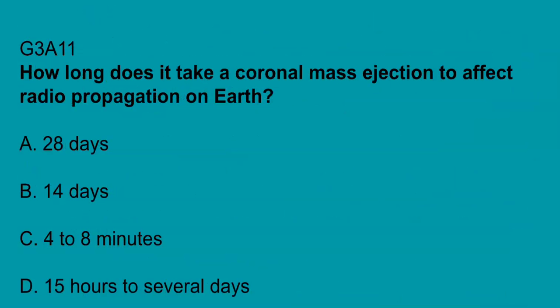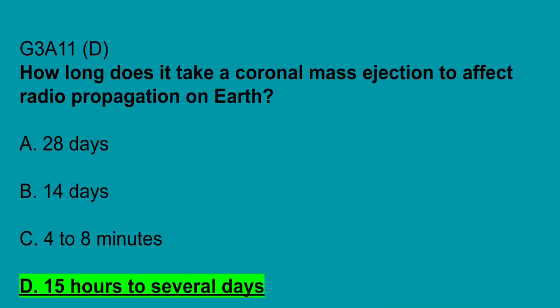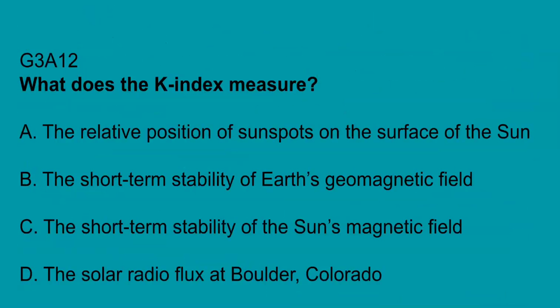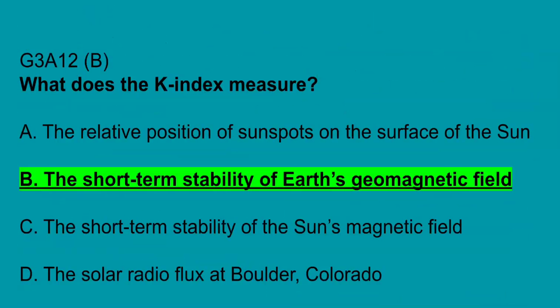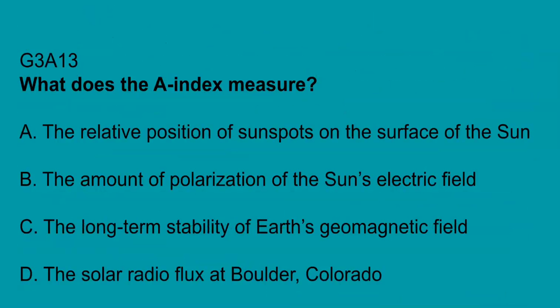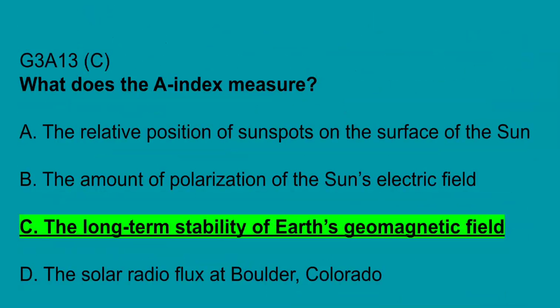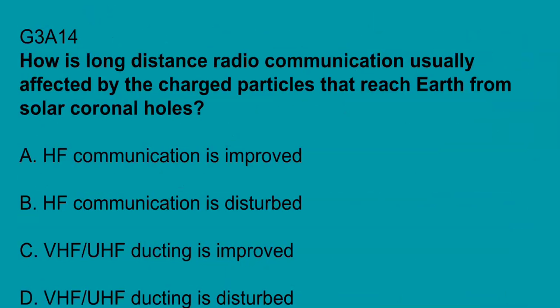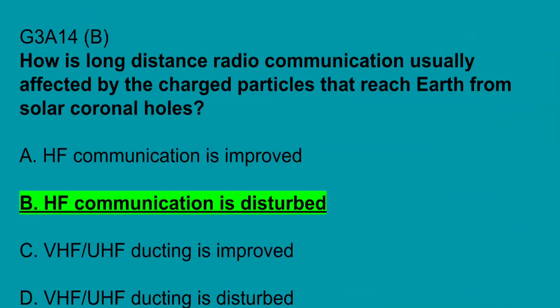G3A11: how long does it take a coronal mass ejection to affect radio communications on Earth? 15 hours to several days. G3A12: what does the K-index measure? The short-term stability of the Earth's geomagnetic field. G3A13: what does the A-index measure? The A-index is the long-term stability of the Earth's geomagnetic field. G3A14: how is long-distance radio communications usually affected by the charged particles that reach the Earth from solar coronal holes? HF communication is disturbed.